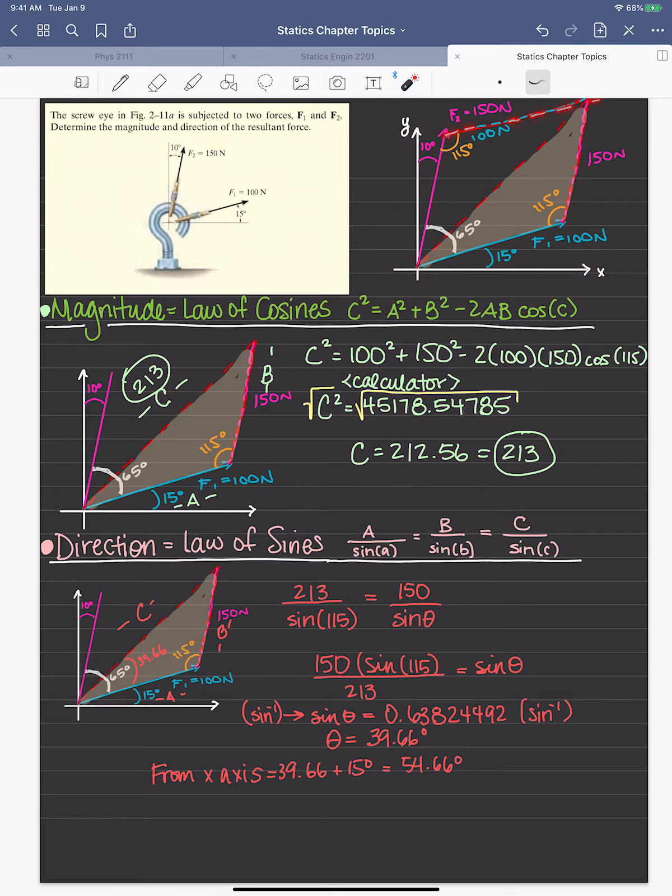And then this middle guy is going to be the resultant vector, more or less. And that's what we're going to want to find for the angle and magnitude.